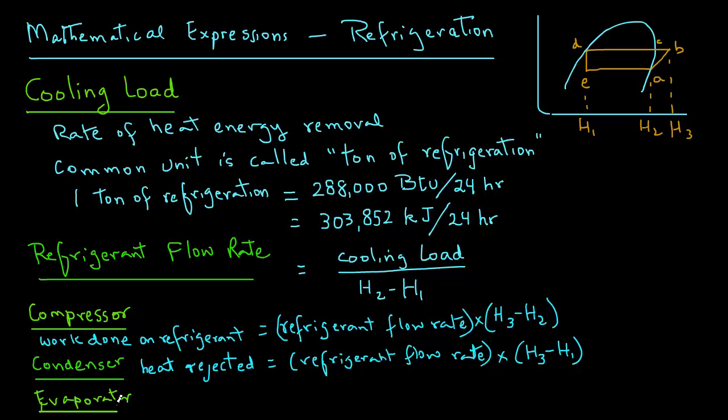For the evaporator, the heat absorbed by the evaporator can be calculated as refrigerant flow rate times H2 minus H1. Note that H2 minus H1 represents the evaporator section, and that is the amount of heat that will be absorbed by the evaporator.